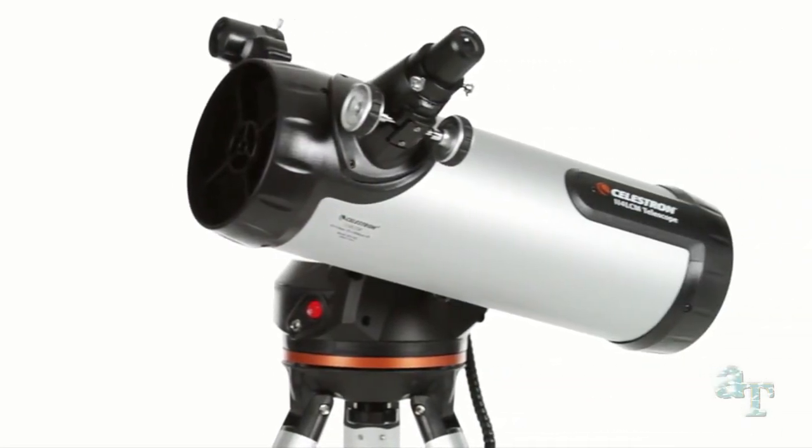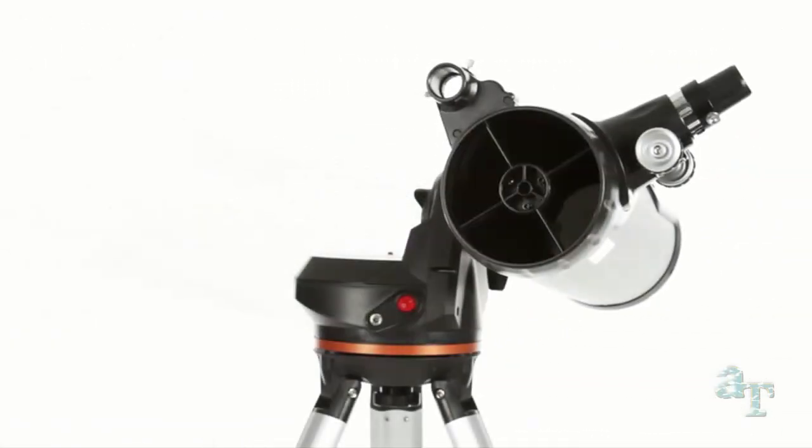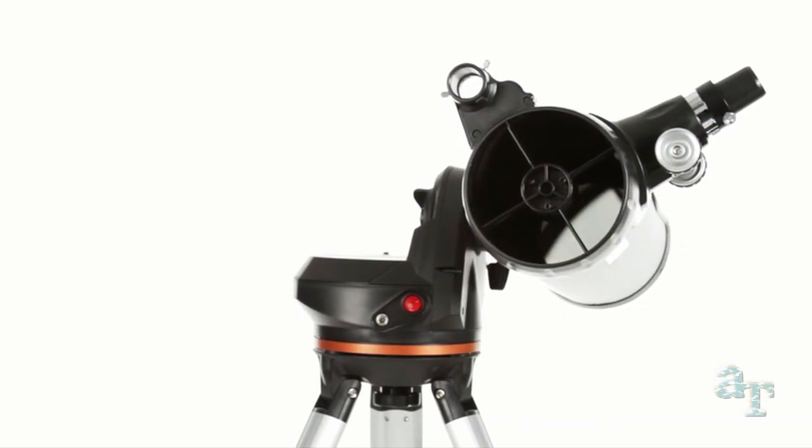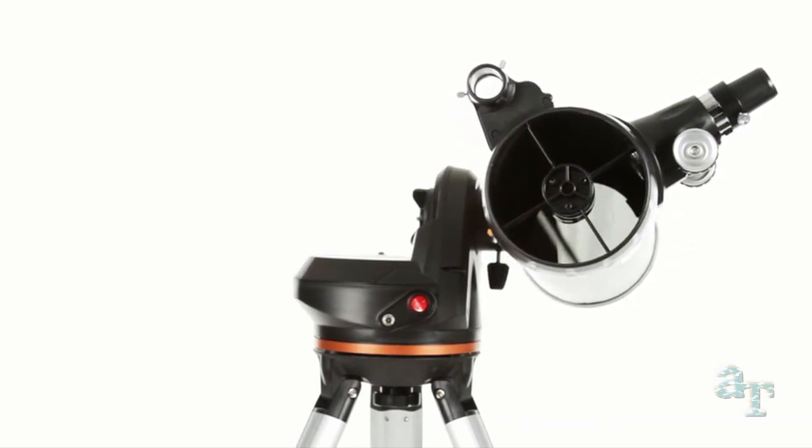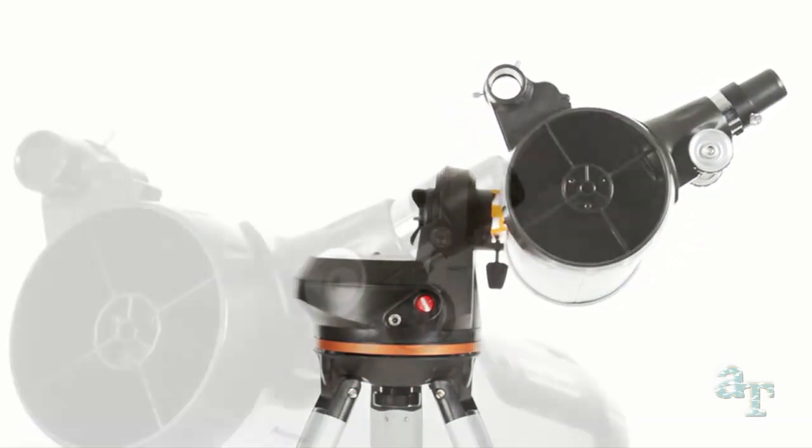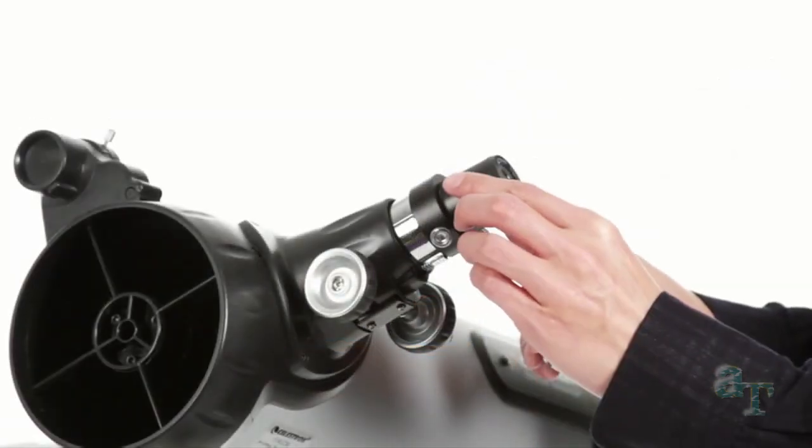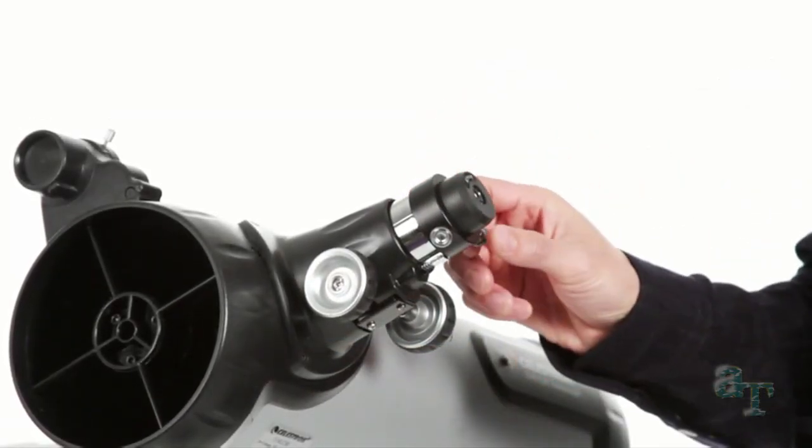With the largest optical tube in the LCM family, the 114 offers a 4.5 inch primary mirror for lots of light gathering ability. Combine it with the included low and high power eyepieces and you'll enjoy detailed views of the rings of Saturn, the gas clouds of the Orion Nebula and hundreds of other objects.